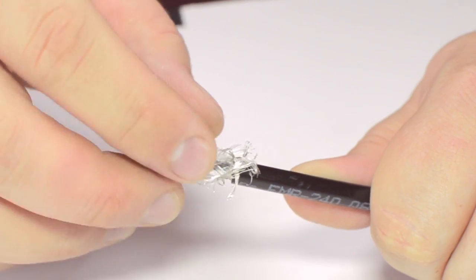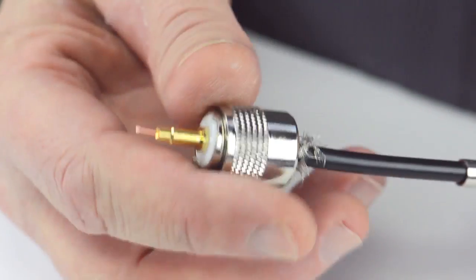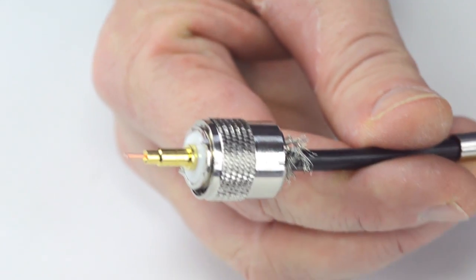Pull back the braided shield and insert the connector housing onto the cable. Make sure that the center conductor reaches up to or past the center pin.